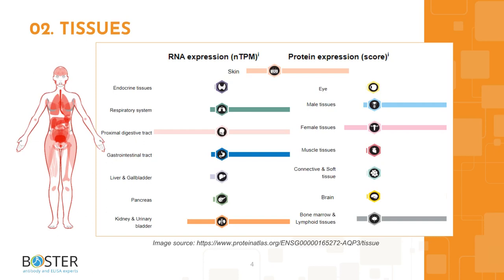In terms of RNA expression, AQP3 has some expression in other tissues such as the pancreas, liver, brain, and muscle. You can find more information on ProteinAtlas.org to check out which cell lines express AQP3 and which ones don't. This information will come in handy when designing positive and negative controls for western blot and immunohistochemistry.